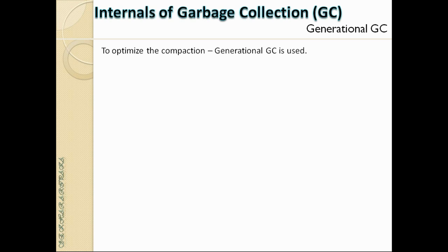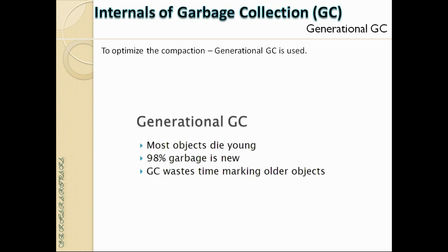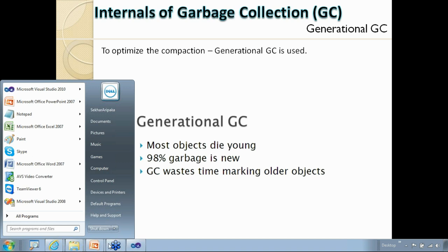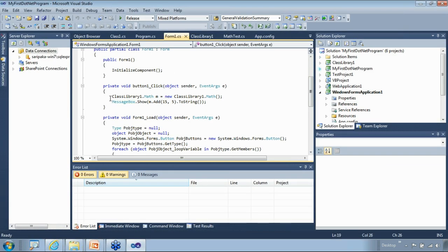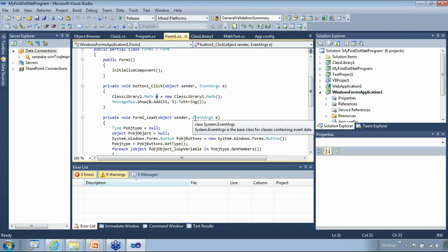To optimize compaction, .NET uses generational GC. Studies show that most objects die young — for example, an object M created inside a button click is scoped to that method and becomes garbage as soon as the method ends. Its lifespan is very small. In contrast, class-level or global variables tend to stay alive longer.